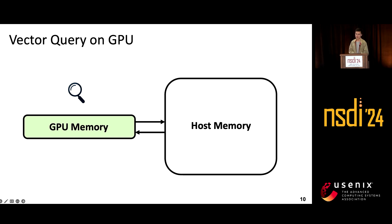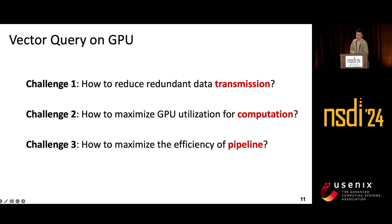A natural idea for supporting large vector databases with GPUs is to use host memory to expand GPU memory, such as transmitting clusters from host memory to GPU memory one by one, or using CUDA unified memory for automatic data swapping. However, this approach faces many challenges. The first challenge is to reduce redundant data transmission. The second challenge is to maximize GPU utilization for computation. The third challenge is how to maximize the efficiency of pipelining the transmission and computation.